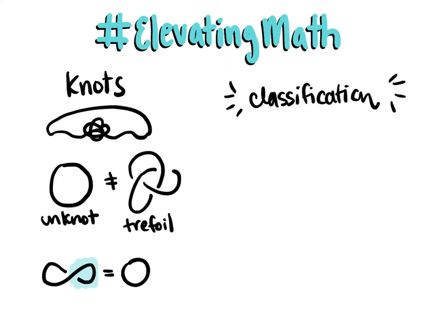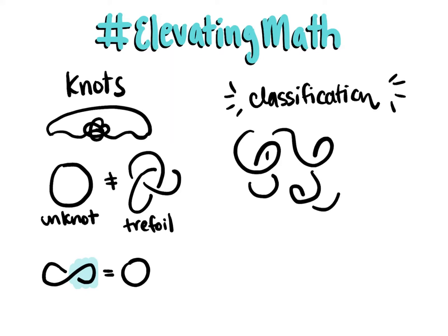And it's a hard problem, because as the number of crossings increases, our knot can get really complicated really fast. As an example, this complicated looking knot is actually the unknot.